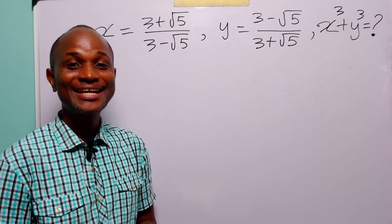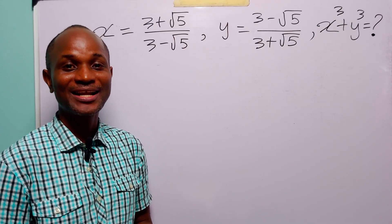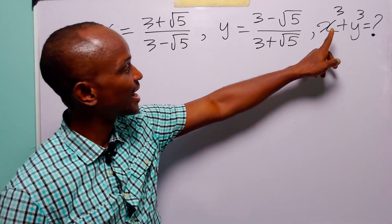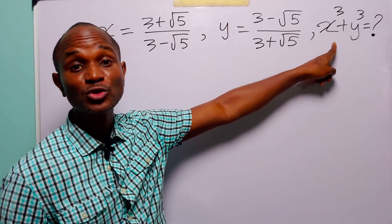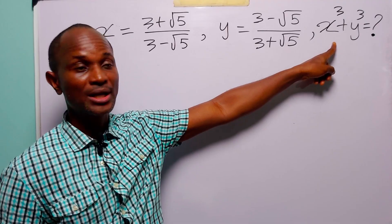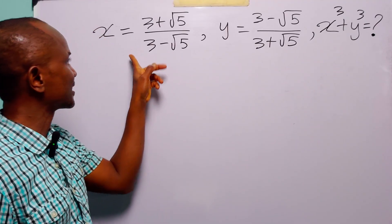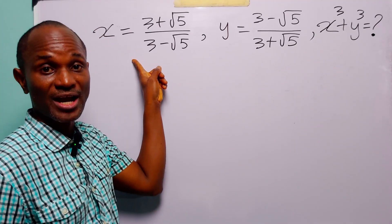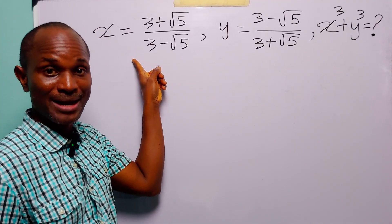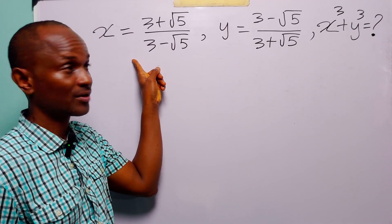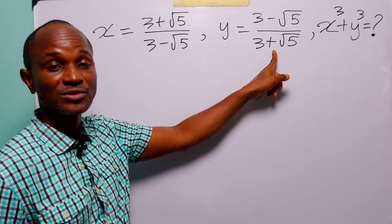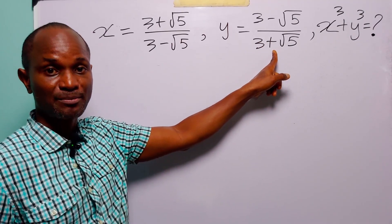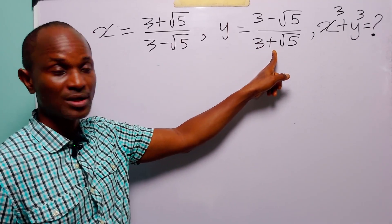Hello and welcome. In this smart tutorial, our task is to find the value of x cubed plus y cubed, given that x is equal to 3 plus root 5 over 3 minus root 5, and y is equal to 3 minus root 5 over 3 plus root 5.